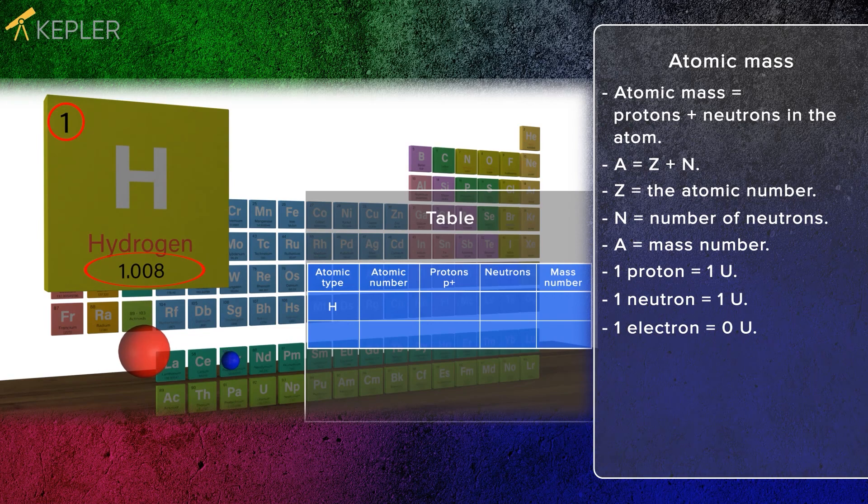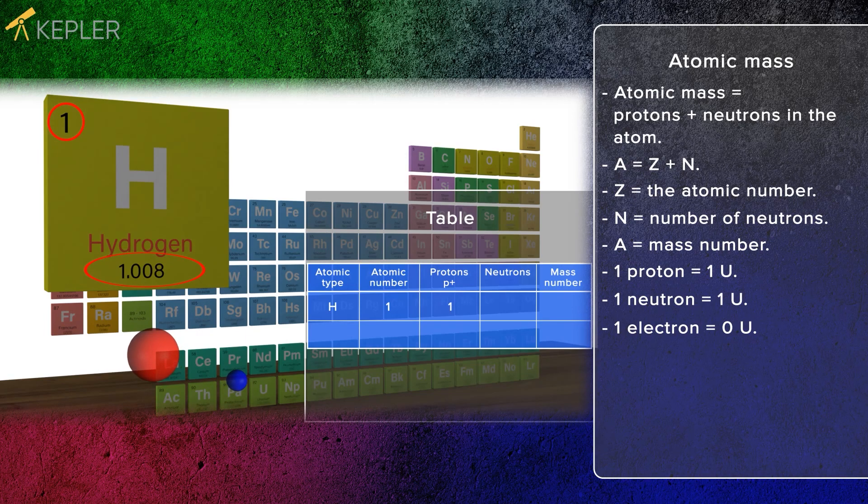In the chart, number 1 is written below the atomic number. The number 1 is also written under the number of protons since it is the same as the atomic number.